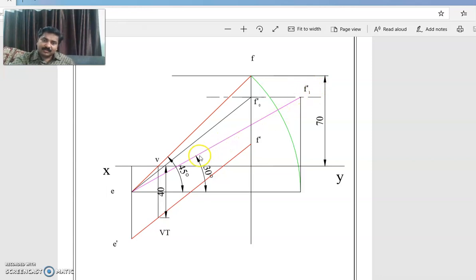When this angle theta is given, if this is F1 dash, F0 dash will be this one. E0 dash F0 dash will be the front view length and its orientation with XY line. Final front view will be having the same orientation, same angle with XY line as this E0 dash F0 dash is having.